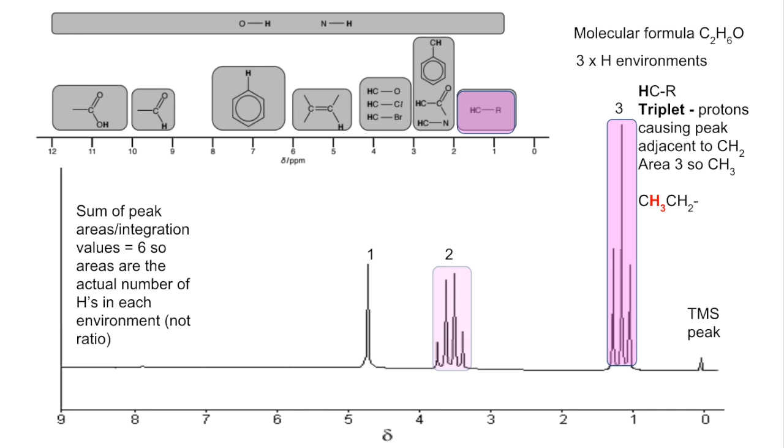The next peak we'll look at is this one here. Again, go to the datasheet. Our options are HC2O, HC2Cl, HC2Br. Well, it can't be the halogen ones because there's no halogen in the molecule. And it's not going to be an OH because it's not a singlet. You can't get an OH coming out as a quartet. So it's got to be the HCO environment.